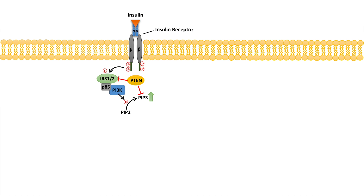PTEN will also inhibit this process as well. PTEN will actually dephosphorylate PIP3 back to PIP2. So PTEN regulates two steps in this pathway: it will dephosphorylate IRS one and two, and dephosphorylate PIP3 back to PIP2.